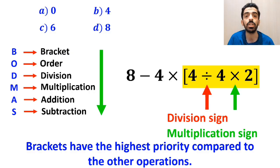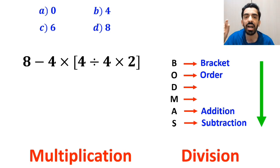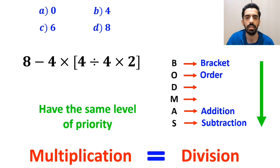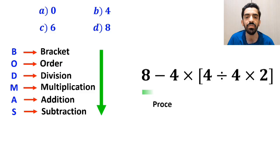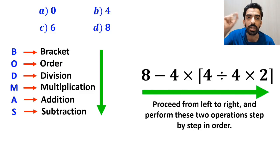we have a division sign followed by a multiplication sign. It's very important to keep in mind that according to the BODMAS rule, multiplication and division have the same level of priority. So, the best thing to do here is to proceed from left to right and perform these two operations step by step in order.